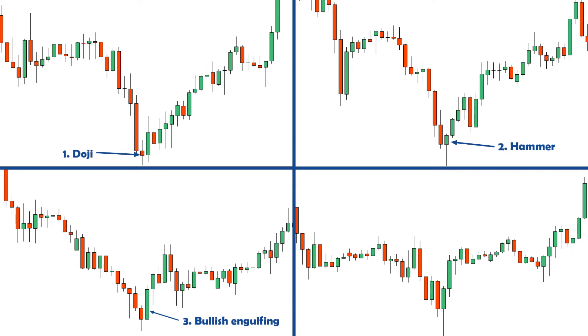And finally, for the bullish piercing, we have a bullish candle that initially gaps lower, but recovers to finish above the midpoint of the first candle. All four of these patterns indicate a possible market reversal.